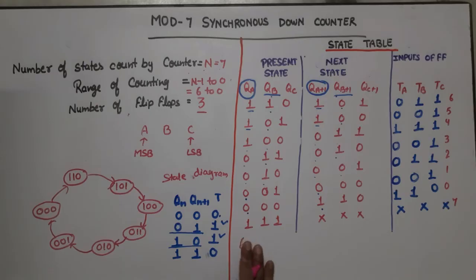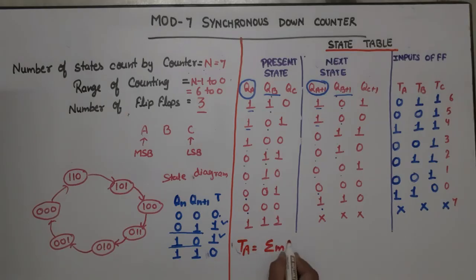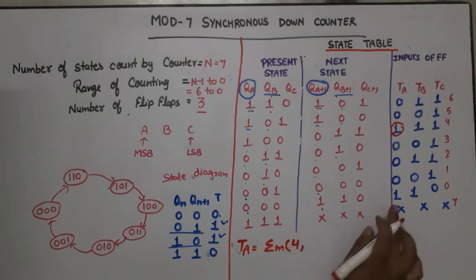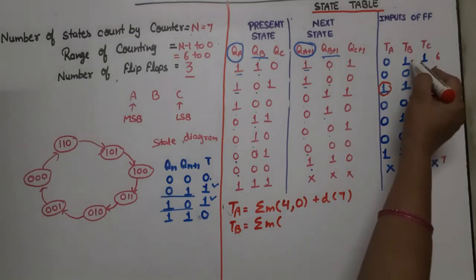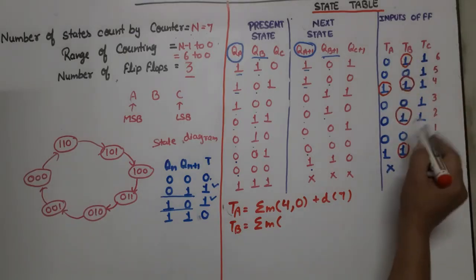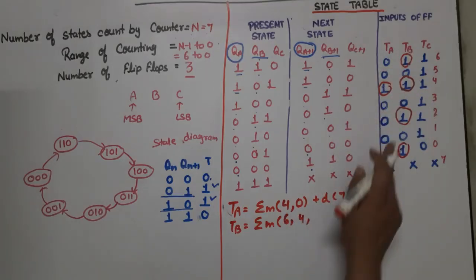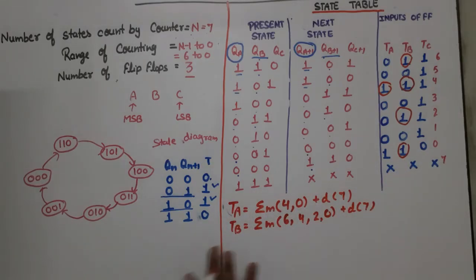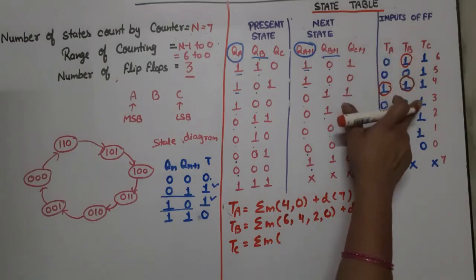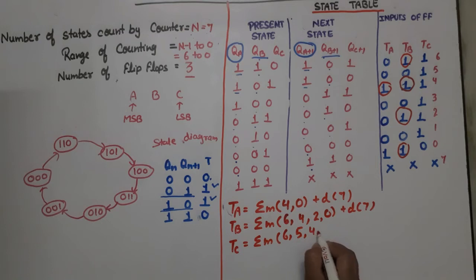Now writing the input equations. For TA: TA = Σm(1, 4, 0) + d(7). For TB: TB = Σm(6, 4, 2, 0) + d(7). For TC: TC = Σm(6, 5, 4, 3, 2, 1) + d(7). Now we will solve these using K-maps to get the simplified equations.